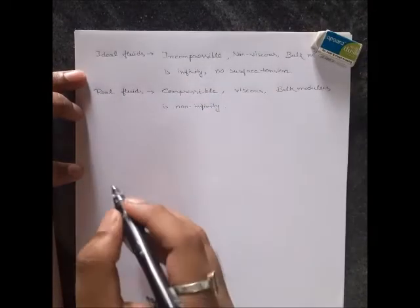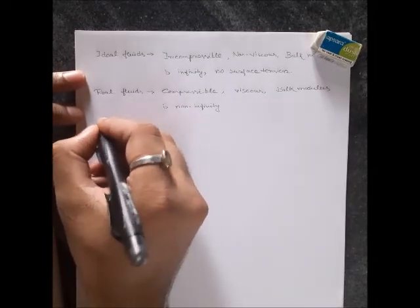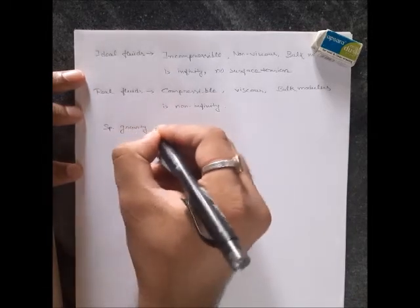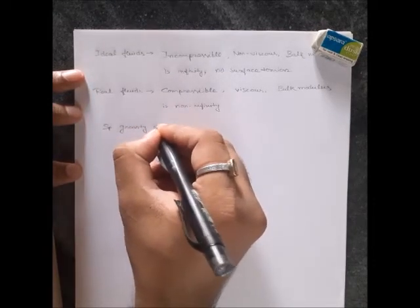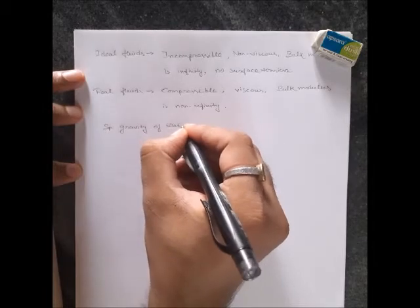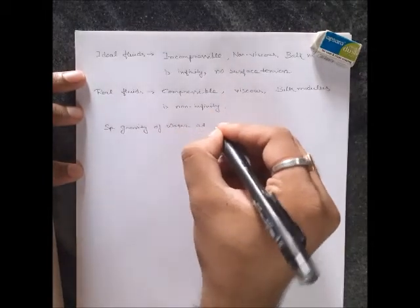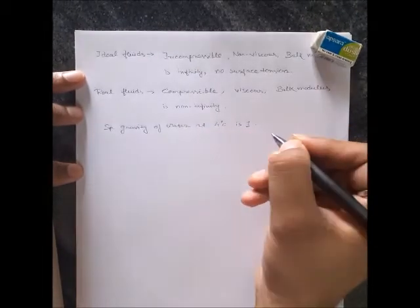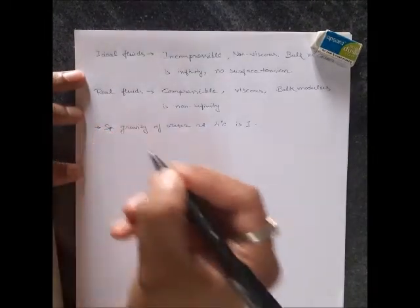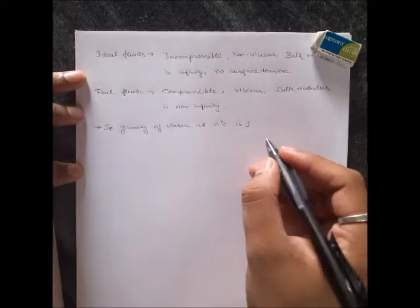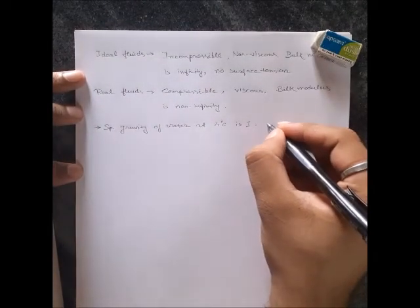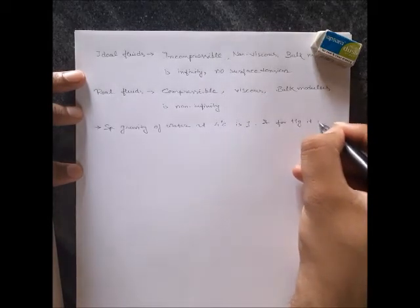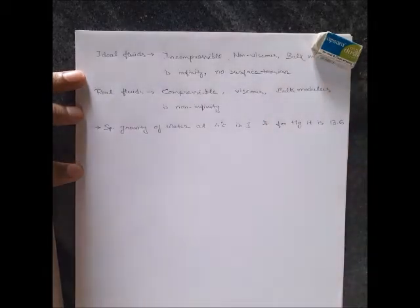There are a few values to remember for specific gravity. Specific gravity of water at 4 degrees Celsius is unity, and for mercury it is 13.6.